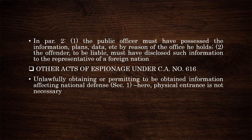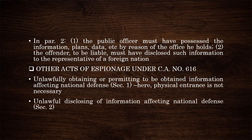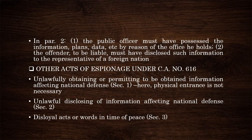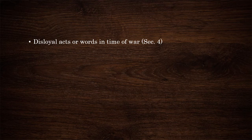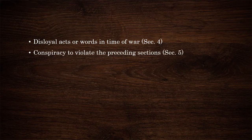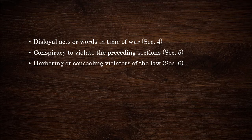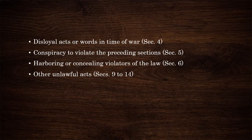Let me give you a rundown. Section 1 covers unlawfully obtaining or permitting to be obtained information affecting the national defense — here, physical entrance is no longer necessary. Section 2 covers unlawful disclosing of information affecting the national defense. Section 3 covers disloyal acts or words in time of peace. Section 4 covers disloyal acts or words in time of war. Section 5 covers conspiracy to violate sections 1, 2, 3, and 4. Section 6 covers harboring or concealing violators of the law. And then there are other unlawful acts under sections 9 to 14. All of these are found in Commonwealth Act number 616.